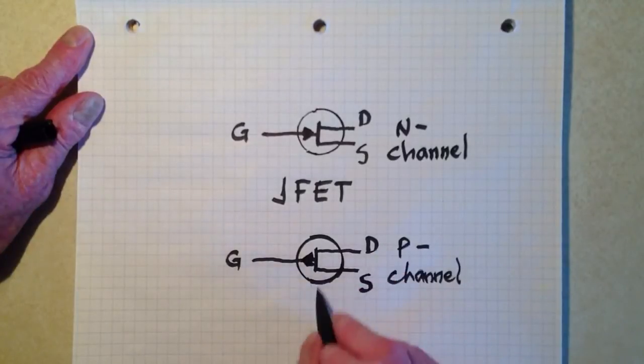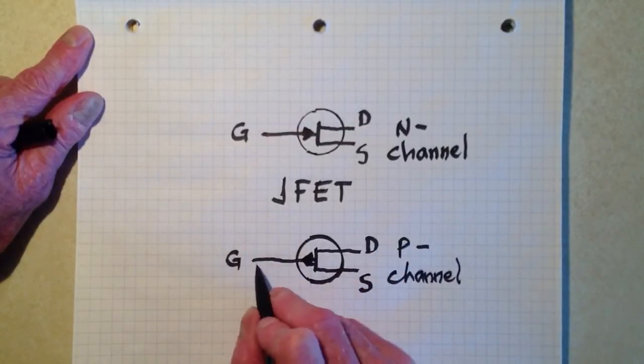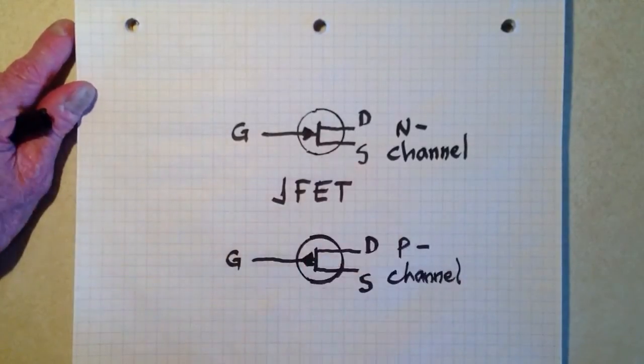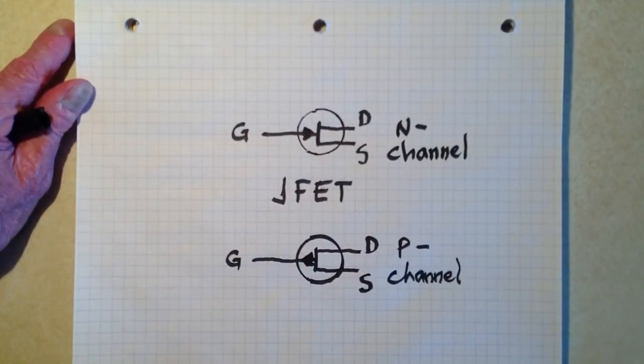Source, gate, drain, P-type material, and the gate is N-type. So that is how a junction field effect transistor is symbolized.